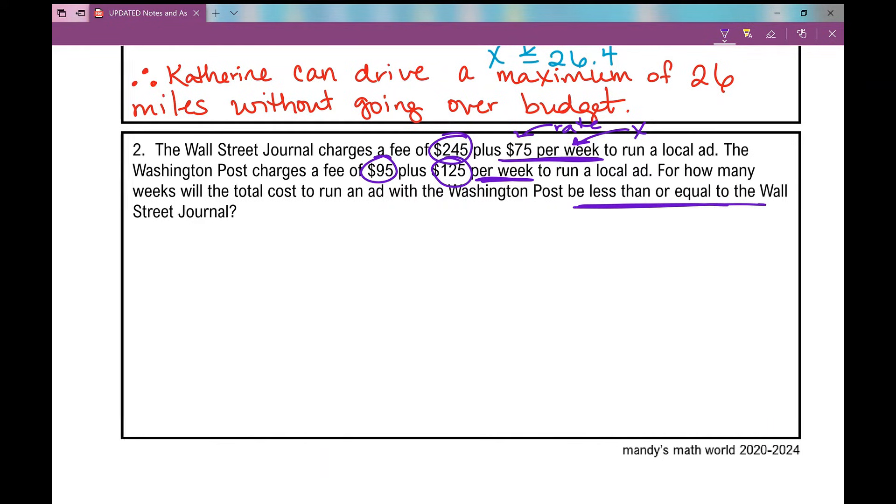The first thing I want to do is label our variable. And I already said since the $75 per week, that's our rate. That's $75 per week, which means that's the number that goes in front of the X. It's going to be 75X, which means X will represent the number of weeks.